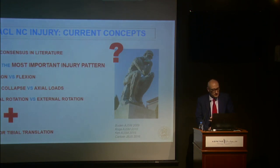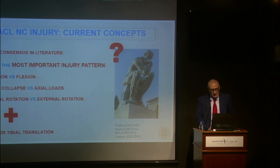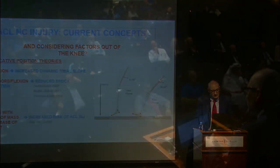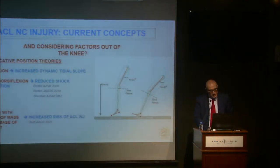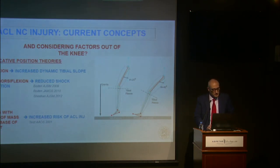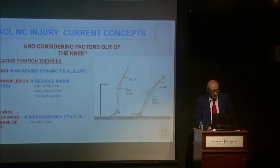There is no consensus on ACL mechanism. What is most important — is the injury pattern extension versus flexion, valgus collapse versus axial load, internal rotation versus external rotation, and is there anterior tibial translation during this mechanism? We found that some say the knee is broken during extension, but the lesion happens more in a flexion position. Hip flexion increases dynamic tibial slope, ankle dorsiflexion reduces shock absorption, and landing with the center of mass behind the base of support all increase ACL injury risk.